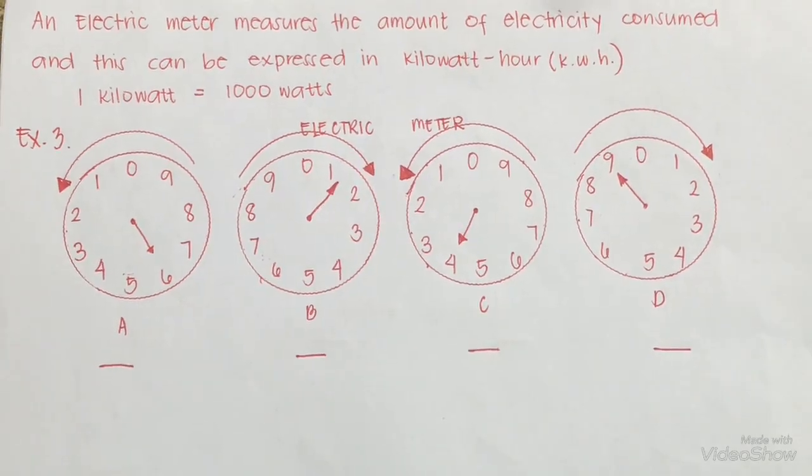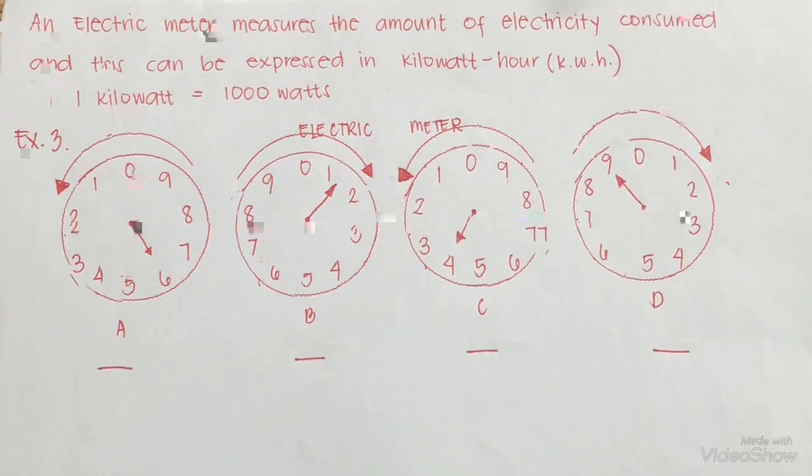Now let's proceed to electric meter reading. Electricity is used by a wide variety of household appliances and machines — for cooking, lighting, ironing, and operating different appliances. An electric meter measures the amount of electricity consumed, expressed in kilowatt hours. One kilowatt is equal to 1,000 watts.